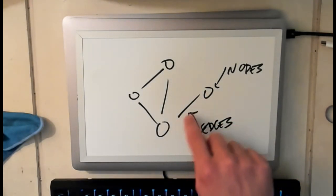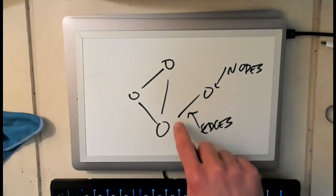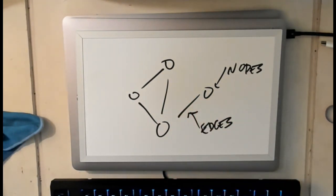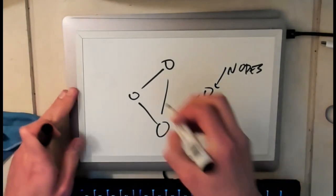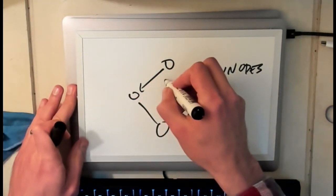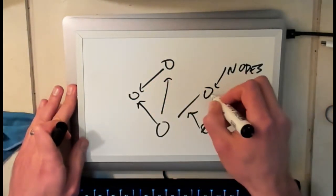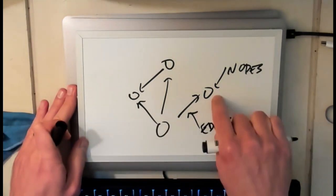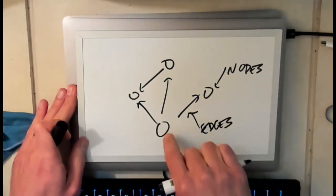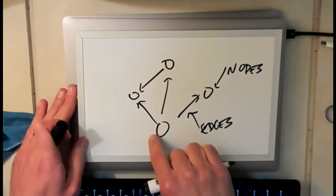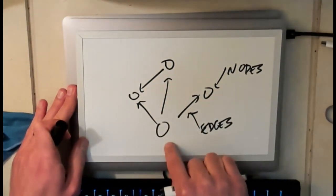So every node right now, every edge, you'll see connects two nodes. But it's also possible for the edges to have a direction to them, right? So let's draw something like this. So now I can go from this node to this node and I can go from this node to this node and I can go from this node to this node but I can't go in the other direction.